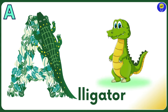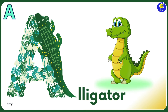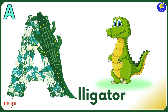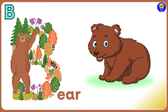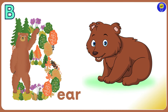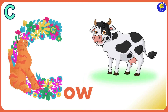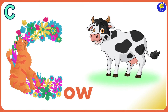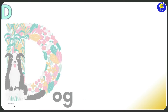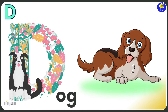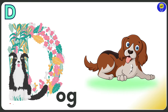A is for Alligator. A, A, Alligator. B is for Bear. B, B, Bear. C is for Cow. C, C, Cow. D is for Dog. D, D, Dog.